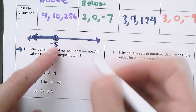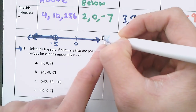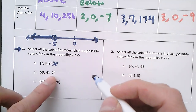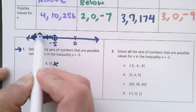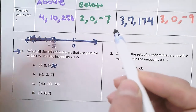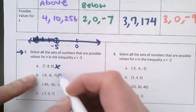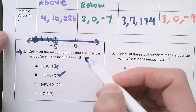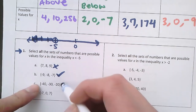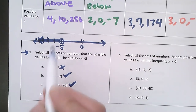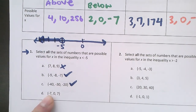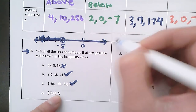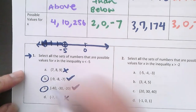Go through each answer option and check if all three numbers are less than negative 5. Positive 7, 8, 9 — those are way to the right, so no. Negative 9, negative 8, negative 7 — those are all to the left of negative 5, so yes, that works. Negative 40, negative 30, negative 20 — going even further negative and more to the left, so those are also less than negative 5, that works too. Negative 7, 0, 7 — negative 7 works, but 0 is to the right of negative 5, which means it's greater, and 7 is even greater than that, so this set doesn't work. So B and C are our answers.